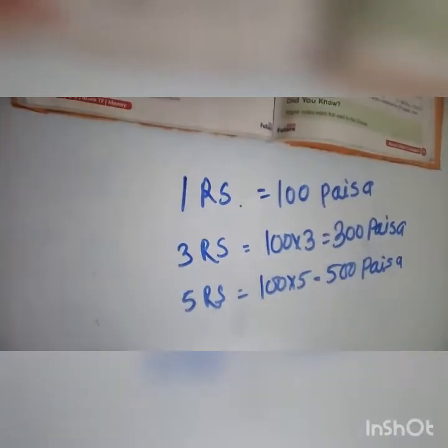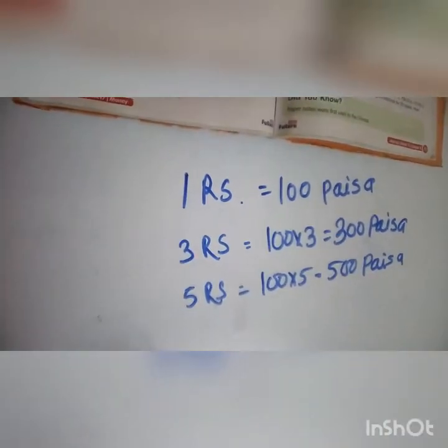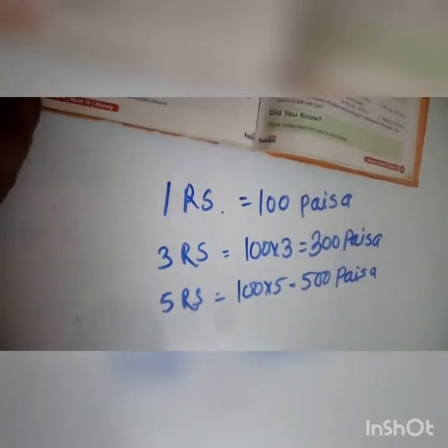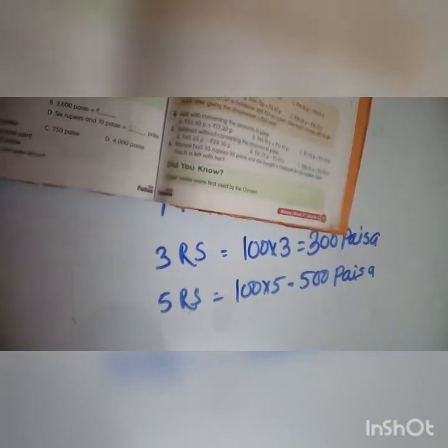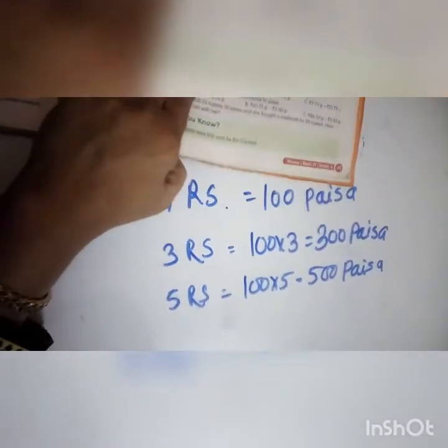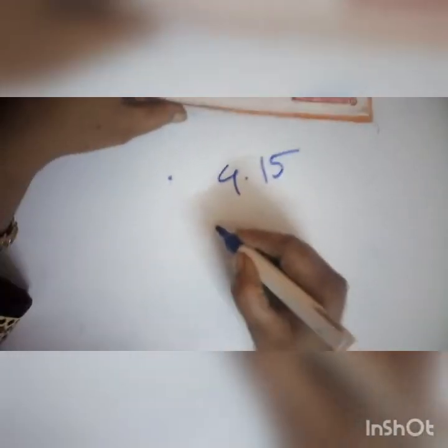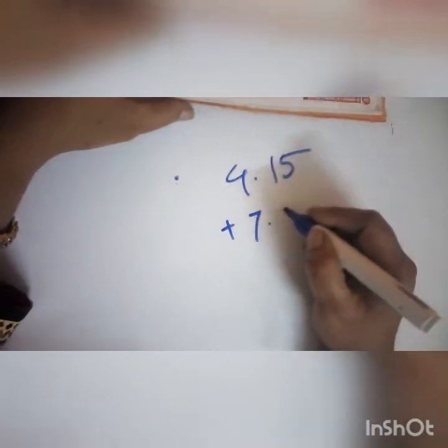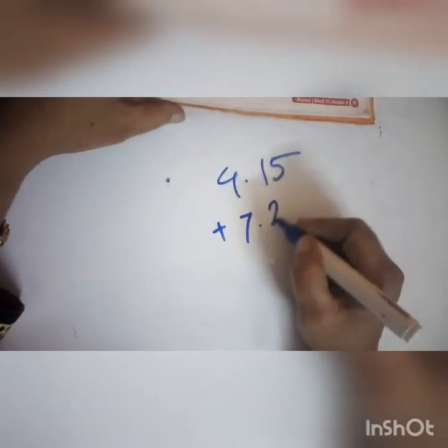Like this. Now we have to solve the exercise on page number 74. We will solve without converting. We have to add: 4 rupees and 50 paisa, plus 4 rupees and 15 paisa, plus 7 rupees and 25 paisa.